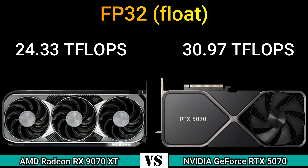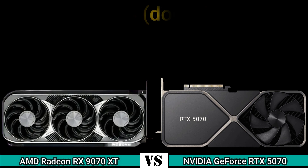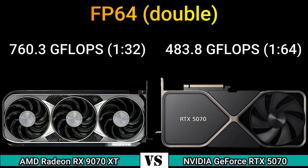FP16: 48.66 TFLOPS (2:1) and 30.97 TFLOPS (1:1). FP32: 24.33 TFLOPS and 30.97 TFLOPS. FP64: 760.3 GFLOPS (1:32) and 483.8 GFLOPS (1:64).